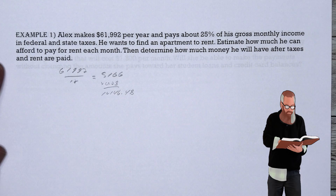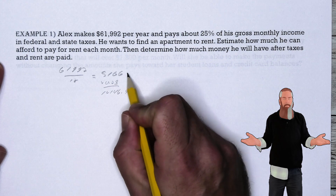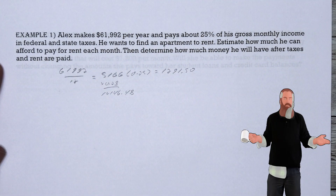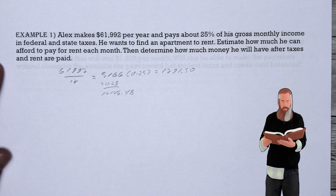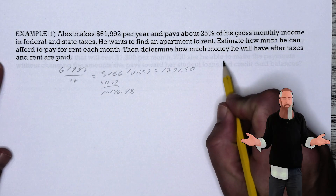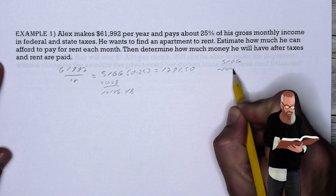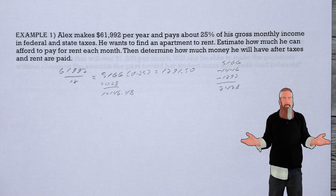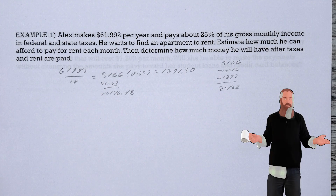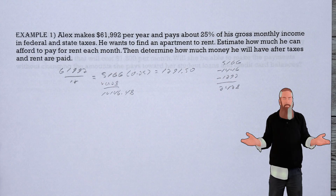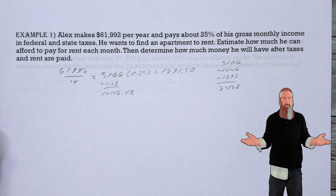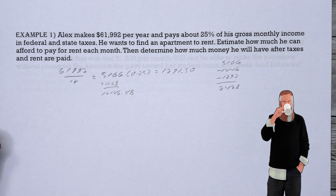Alex pays 25% of his gross monthly income in taxes: $5,166 × 0.25 = $1,291.50, so approximately $1,292 per month. To find what remains: $5,166 - $1,446 - $1,292 = $2,428. You can verify this by noting that 100% - 25% - 28% = 47%, and 47% of $5,166 ≈ $2,428.02.